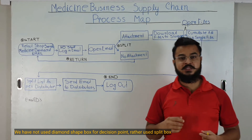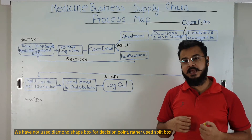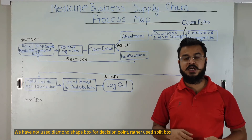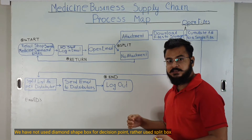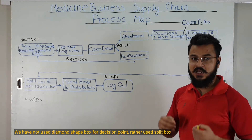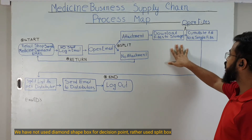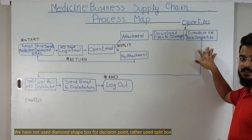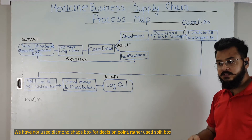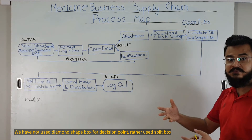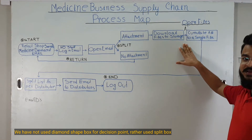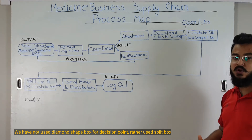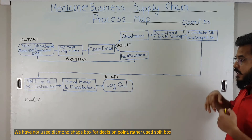Additionally, I would like to give you two more tips which I believe will help you make a self-sufficient, self-explanatory process map. Number one: try to incorporate or capture as many steps as possible. For example, here after downloading the file to storage, I have mentioned the next step as 'accumulate all to a single file' — but what about opening the file from storage, copying, and then pasting into the cumulative file? Try to capture as many steps as possible, as it gives more understanding and depth to a person reading your process map.